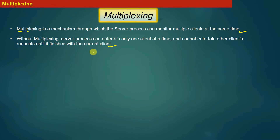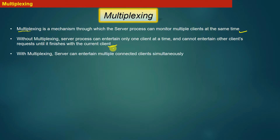We already saw this problem in our previous demonstration of server-client communication — when the server was processing the request of one client, it did not respond to the connection initiation request sent by another client. So basically our server was responsible for entertaining only one client at a time, which is a huge drawback. A server process should have the capability to handle multiple clients at the same time, and therefore we have the concept of multiplexing, using which a server can entertain multiple connected clients simultaneously.